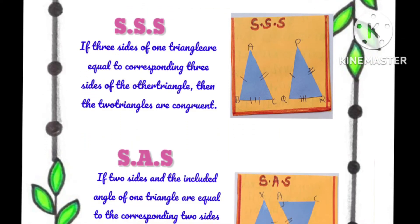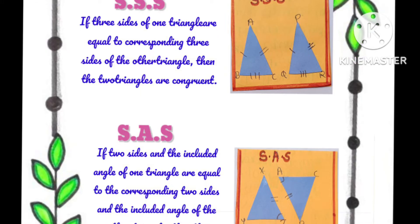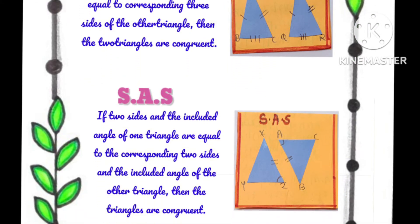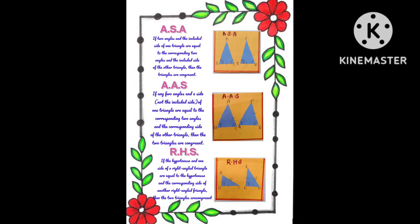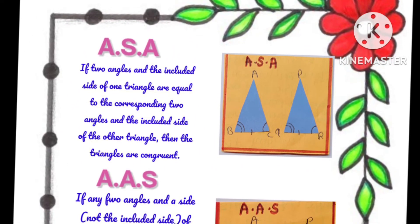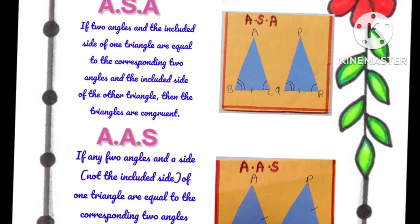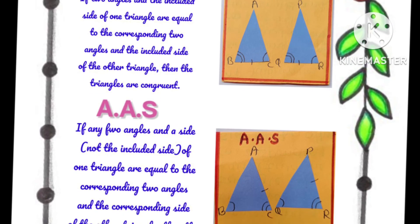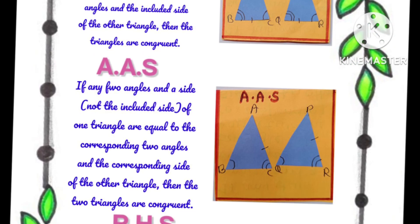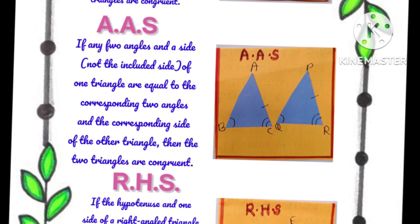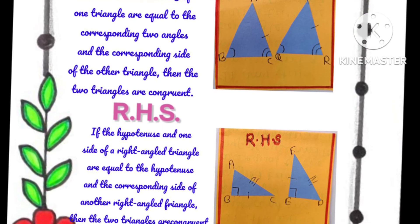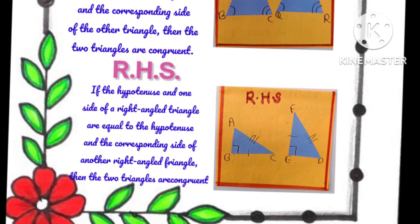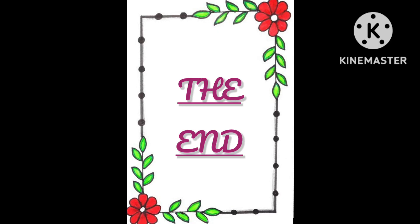Number two is side-angle-side, meaning the SAS criteria. Next is angle-side-angle, the ASA criteria. After that, angle-angle-side is the AAS criteria. Finally, RHS means right angle hypotenuse side. And here is the end of the portfolio.